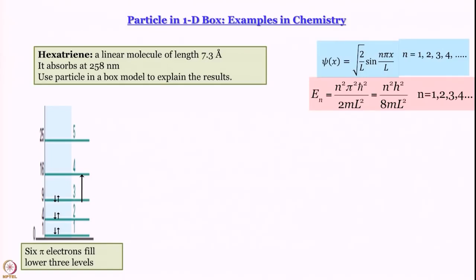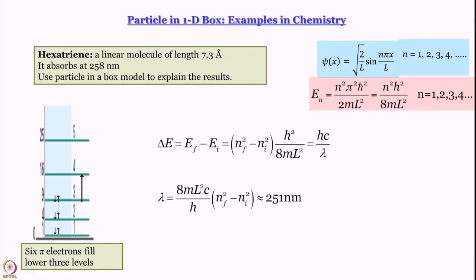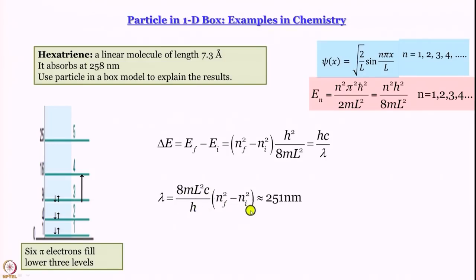Now we work out the energy difference: ΔE = (nf² - ni²) × h²/8mL², which equals hc/λ. So λ = 8mL²c / [h(nf² - ni²)]. Here L = 7.3 angstrom, m is the mass of an electron, c and h are known. We put ni = 3, nf = 4, and the value of λ we get is 251 nanometer. The experimental result is 258 nanometer. Are they exactly the same? No. Are they close? Yes.